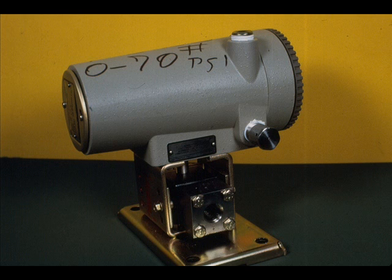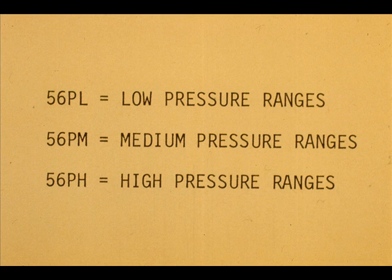The Veritrac 56P transmitters are designed to measure gauge pressure. The model 56PL is for low ranges. The 56PM is for medium ranges. And the 56PH covers the high ranges.